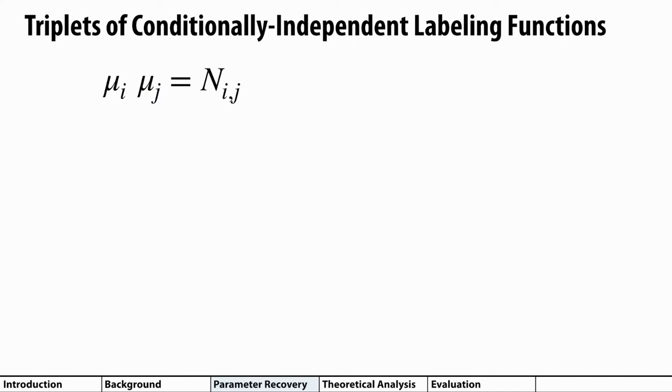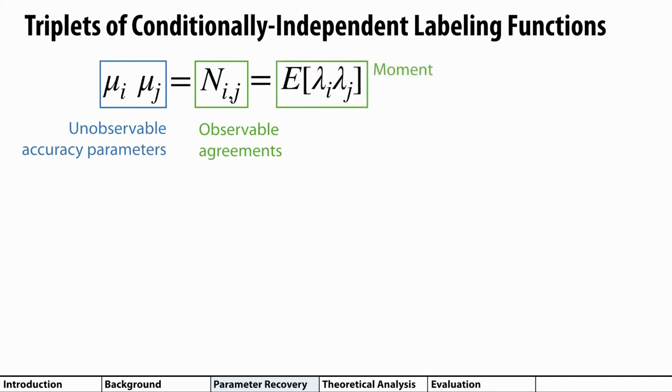Let's dive into how we solve for these accuracies with the method of moments. We'll take a look at the accuracies mui and muj of two labeling functions. These accuracy parameters are highlighted in blue on the left side of this equation. It turns out that by looking at conditional independencies in the graph structure, we can recover the accuracy parameters by looking at the agreement rates between labeling functions, which is this Nij variable highlighted in green on the right side of the equation. Now, this agreement rate is just the empirical rate that two labeling functions agree with each other, which is a number that we can compute directly. Formally, this agreement rate can be computed with a second order moment calculation, which is where the method of moments technique gets its name.